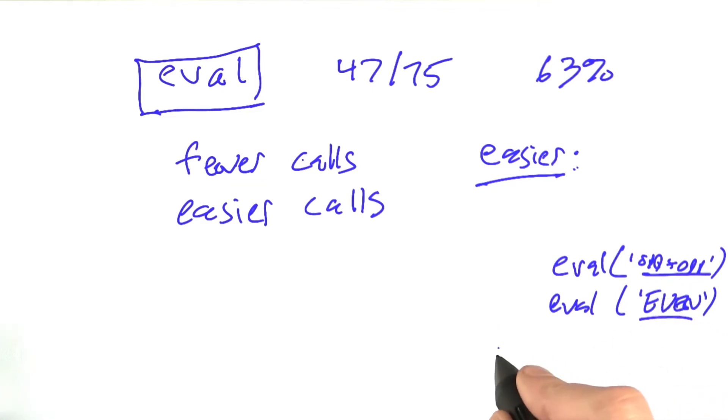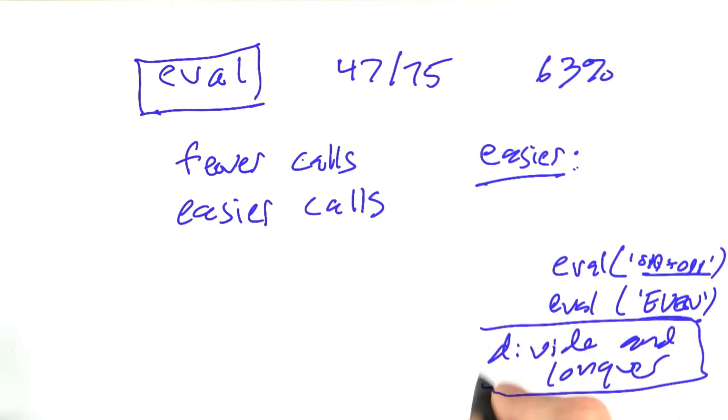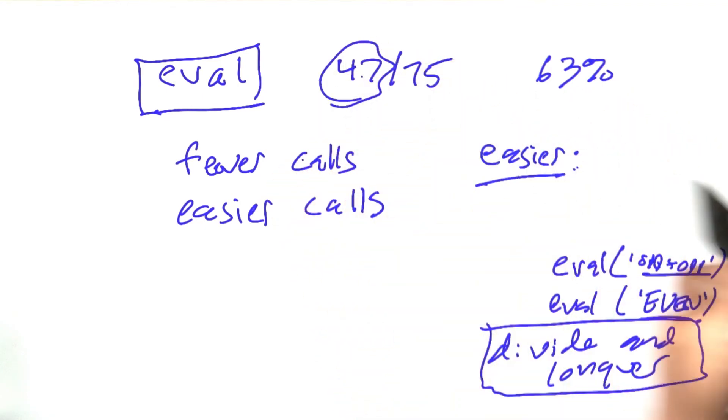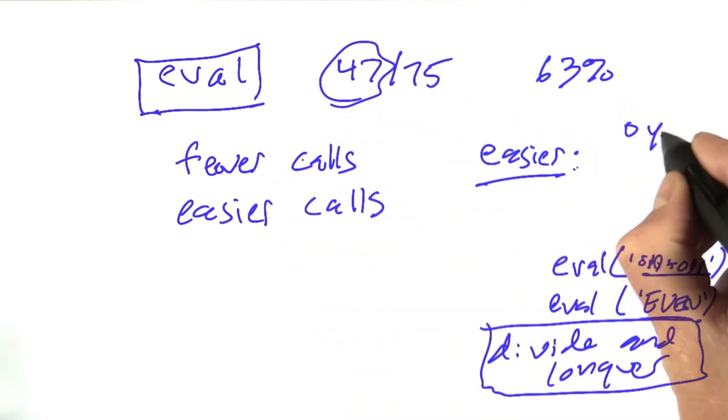Often this idea of divide and conquer is a good idea for program design. Do you think that that approach would work here to make the calls to eval easier so that we could cut down on this 47-second execution time? Yes or no?